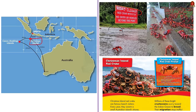Fifthly, Cocos or Keeling Islands — it is located to the south-west of Indonesia. It is also a territory of Australia. It is known for its coral atolls, coconut palm-lined beaches and diverse bird life.